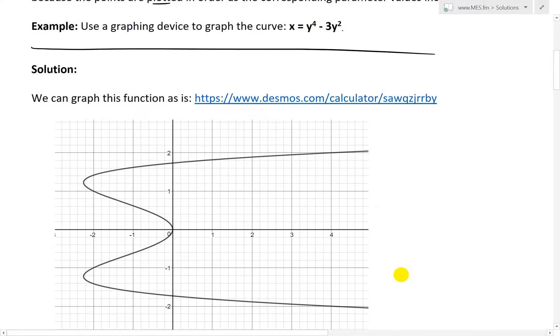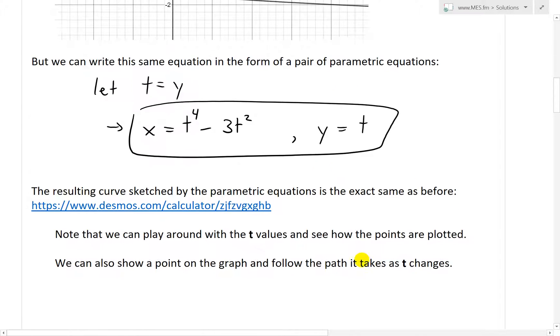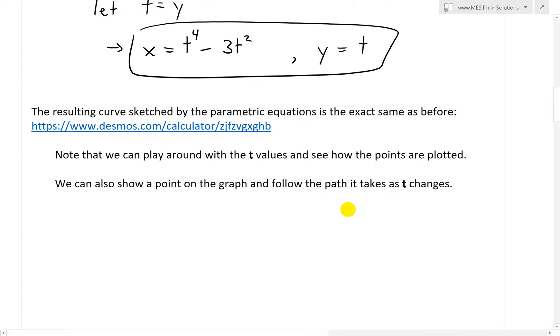We've written this exact same curve but now in this form. If we were trying to graph this set of parametric equations, what we can do is go to that same Desmos calculator. The resulting curve sketched by the parametric equations is the exact same as before. But note that we can play around with the t values and see how the points are plotted, and we can also show a point on the graph and follow the path it takes as t changes.